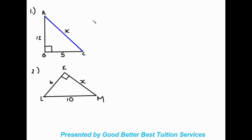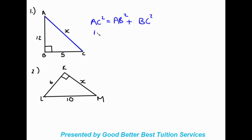We're going to write out the theorem. The square on the hypotenuse — that is AC squared — is equal to the sum of the squares of the other two sides: AB squared plus BC squared. Now we substitute in the values we know to find the unknown, which is AC. AB is 12, so that's 12 squared, plus BC which is 5, so that's 5 squared.